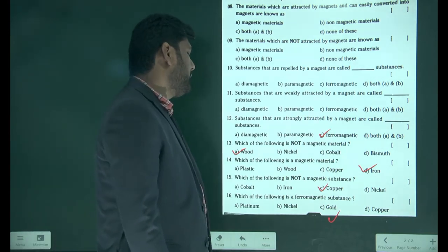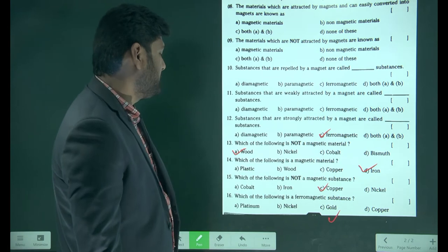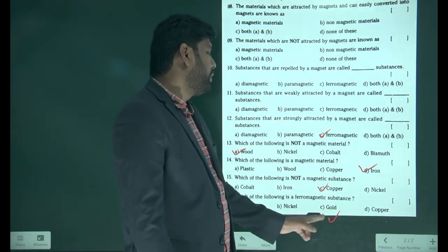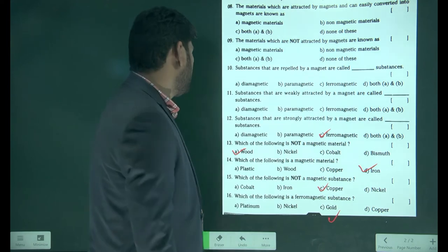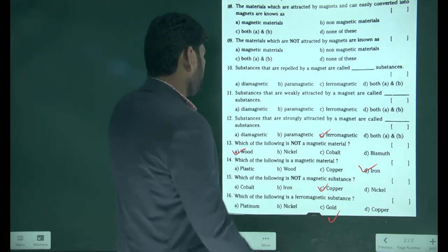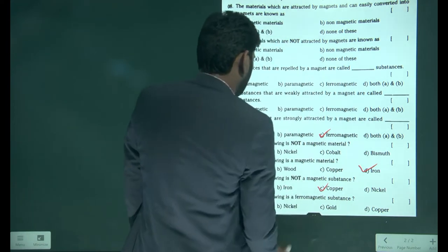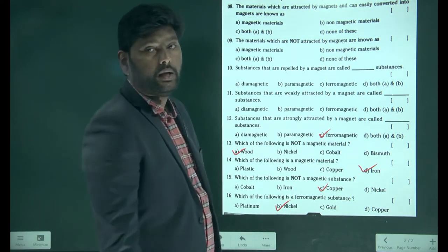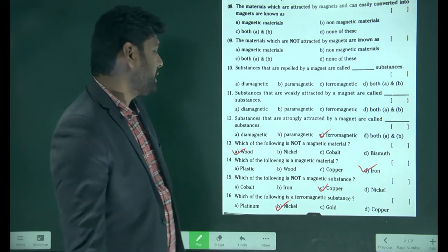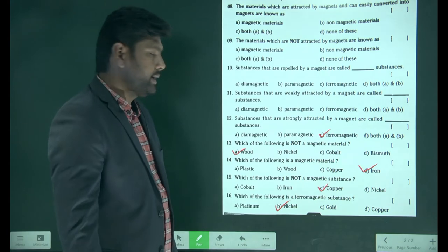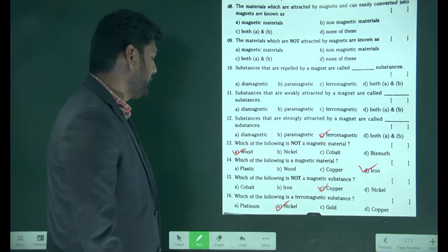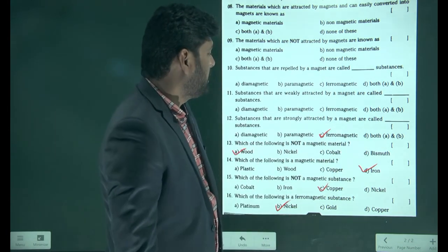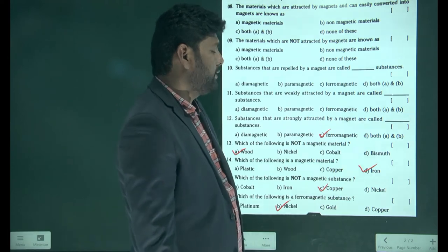Which of the following is a ferromagnetic substance — platinum, nickel, gold, or copper? The very simple answer is nickel. Nickel is a powerful ferromagnetic material compared to platinum, gold, and copper. These are the answers for the given questions.